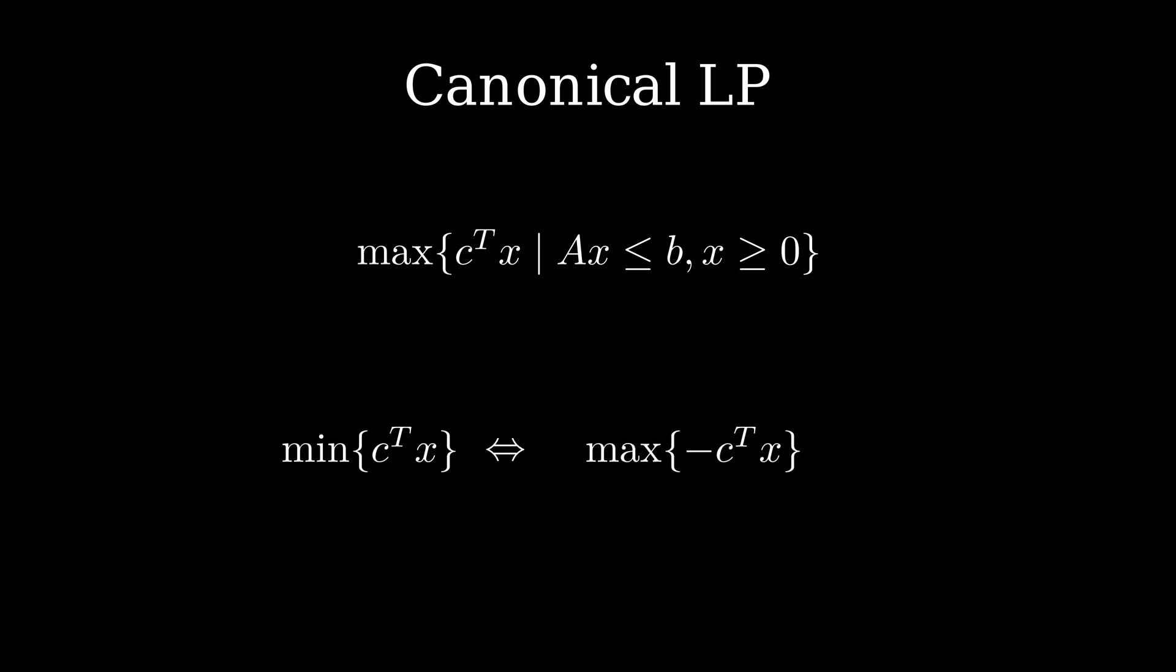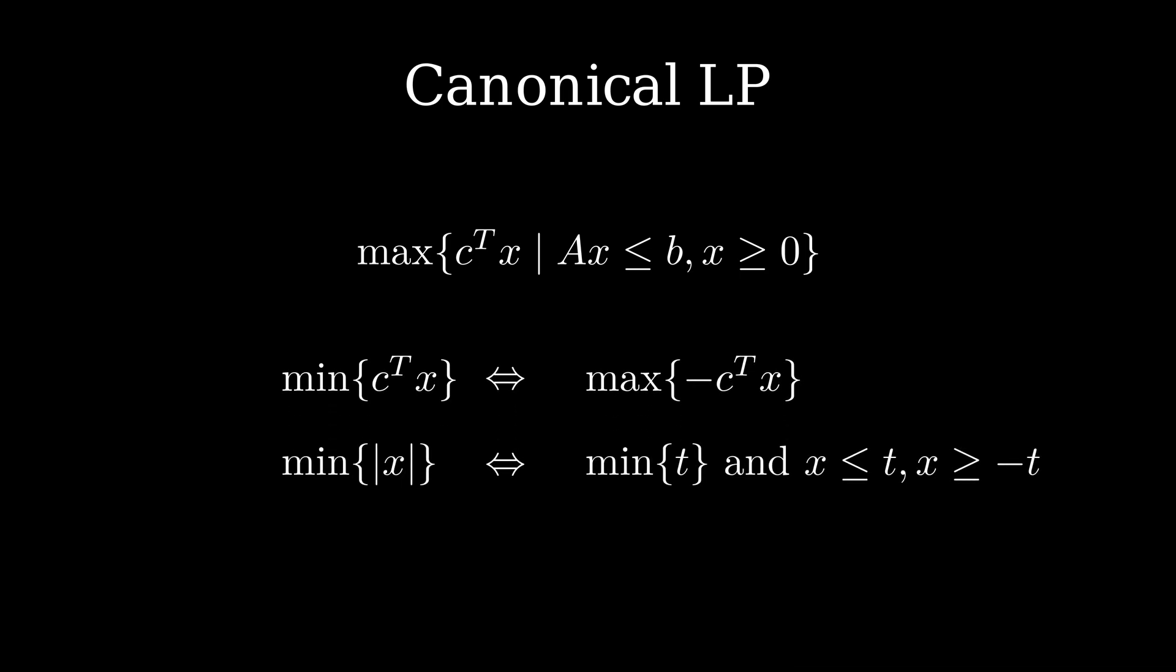We can express even more complex objectives that do not look linear at first. Minimizing the absolute value can be expressed as minimizing a parameter t and constraining x to differ at most t from the origin. Let us look how this more general form can be viewed geometrically.